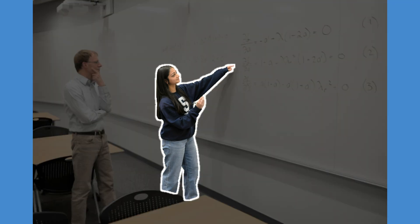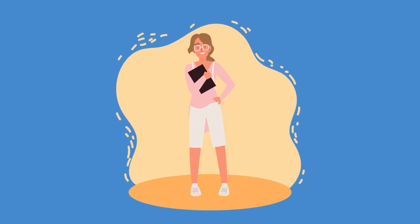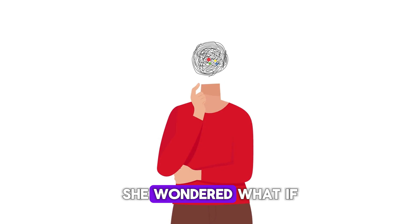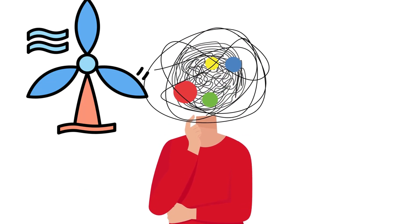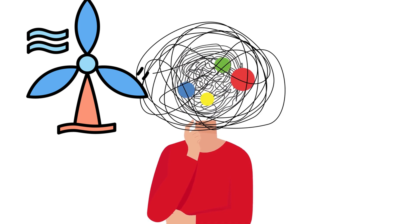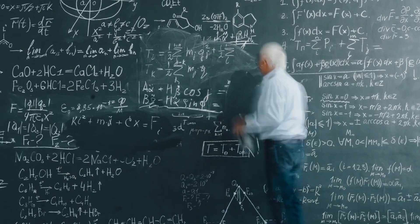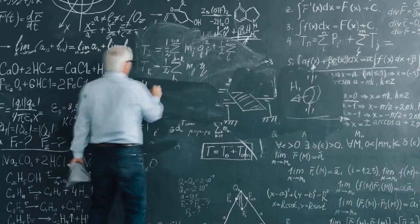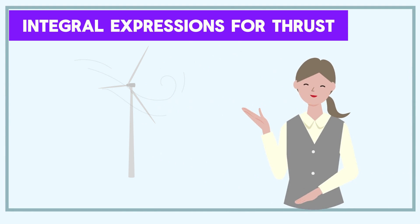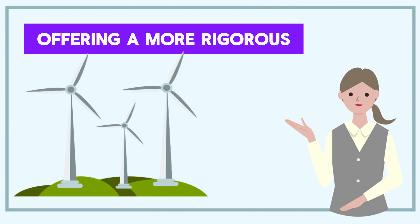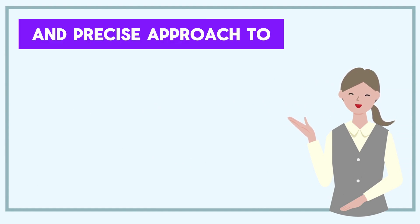Enter Divya Tiagi, a bright and curious student from Pennsylvania State University who, during her undergraduate studies, started asking questions that stumped even her mentors. She wondered, what if we stop relying on approximate or numerical methods and derive the optimal circulation distribution analytically by framing the problem as a variational optimization? She hoped to obtain exact integral expressions for thrust and bending moment coefficients, offering a more rigorous and precise approach to rotor design.